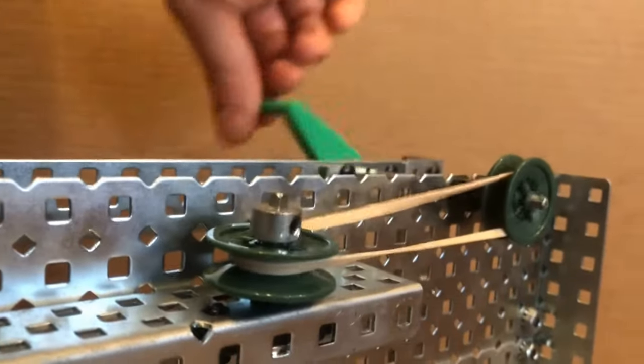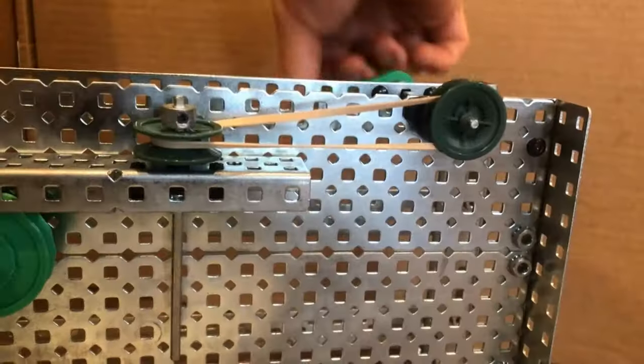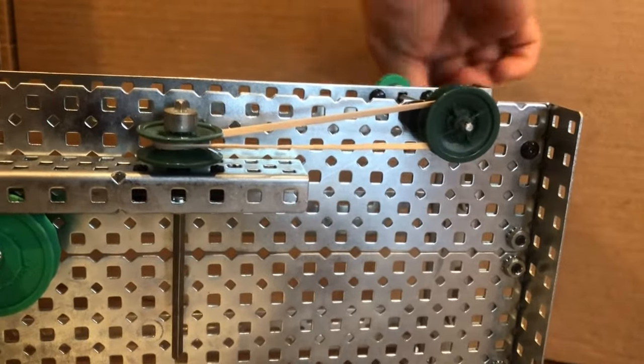However, alternate configurations can be made to have a pulley at 90 degrees from the output. This is due to the flexibility of the belt itself.